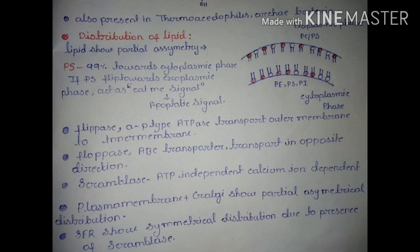To clarify: flippase transports lipids from the outer leaflet of the membrane to the inner leaflet. Floppase is an ABC transporter, also ATP-dependent, and transports lipids from the inner leaflet of the membrane to the outer leaflet — opposite to flippase.